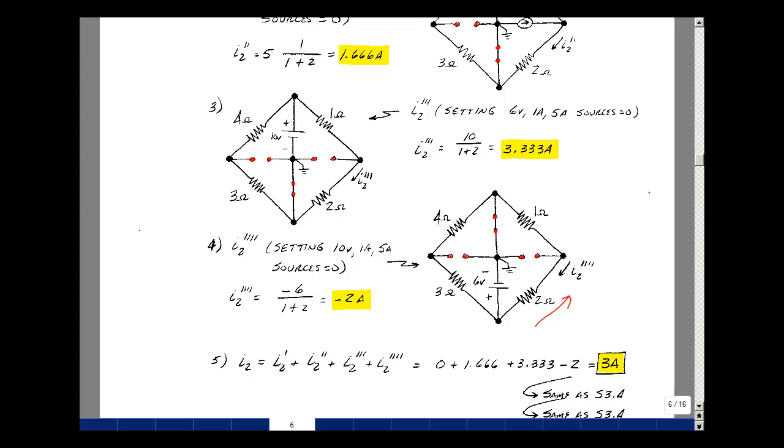And now I can add up the results. So I2 due to the first source was zero. Due to the second source was 1.66 amps. Due to the third source was 3.333. And the last source, minus 2. And that turns out to be 3 amps. And that was what we found in supplemental problem 3.4. And this is supplemental problem 3.6. Thanks.